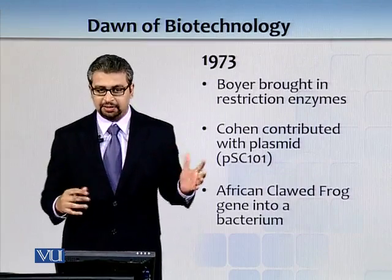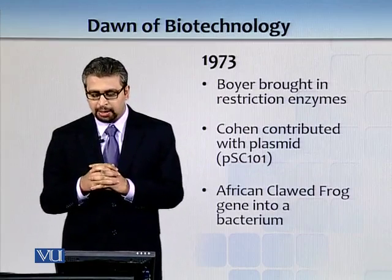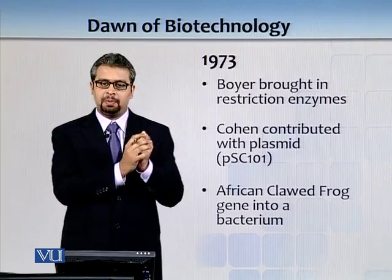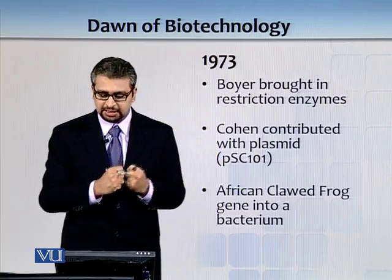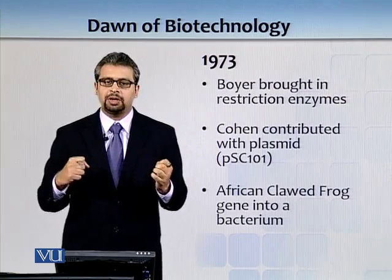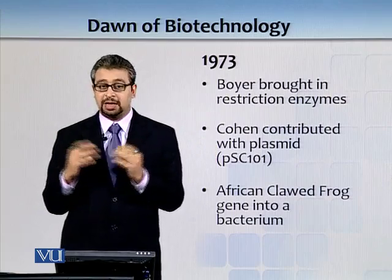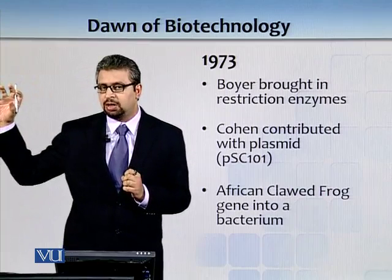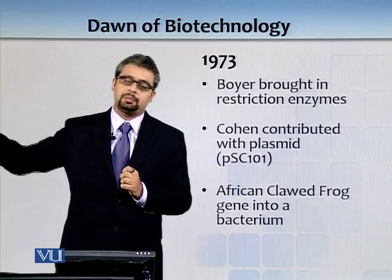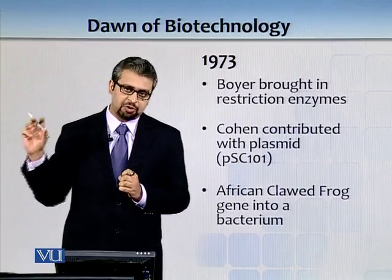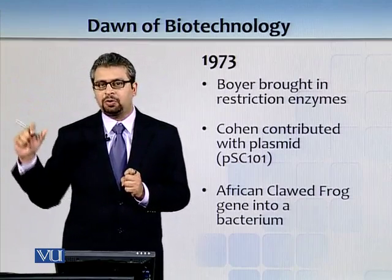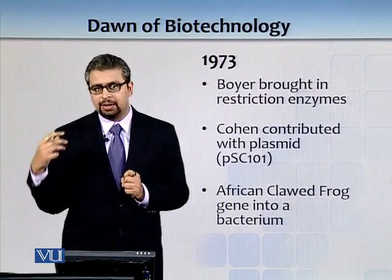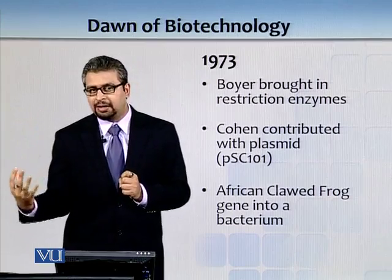In 1973, Herbert Boyer met Stanley Cohn at a conference. Boyer brought restriction enzymes, and Cohn contributed a plasmid — PSC-101 — which had tetracycline resistance. Plasmids are extra-chromosomal DNA floating in the cytoplasm of a bacterium, and they replicate independently of the chromosome.